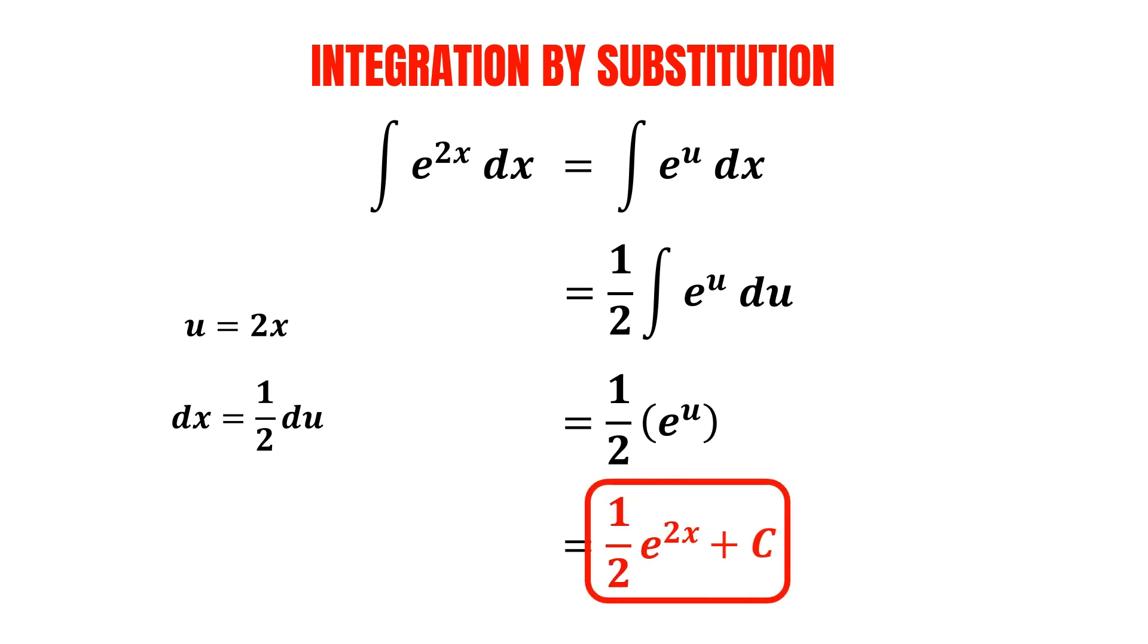We've got our final answer for the integral of e to the 2x, which is 1 over 2, multiplied by e to the 2x, plus C.